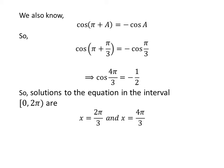So the solutions to the equation cosine of x plus 1 is equal to minus cosine of x in the interval 0 to 2 times pi are 2 times pi upon 3 and 4 times pi upon 3.